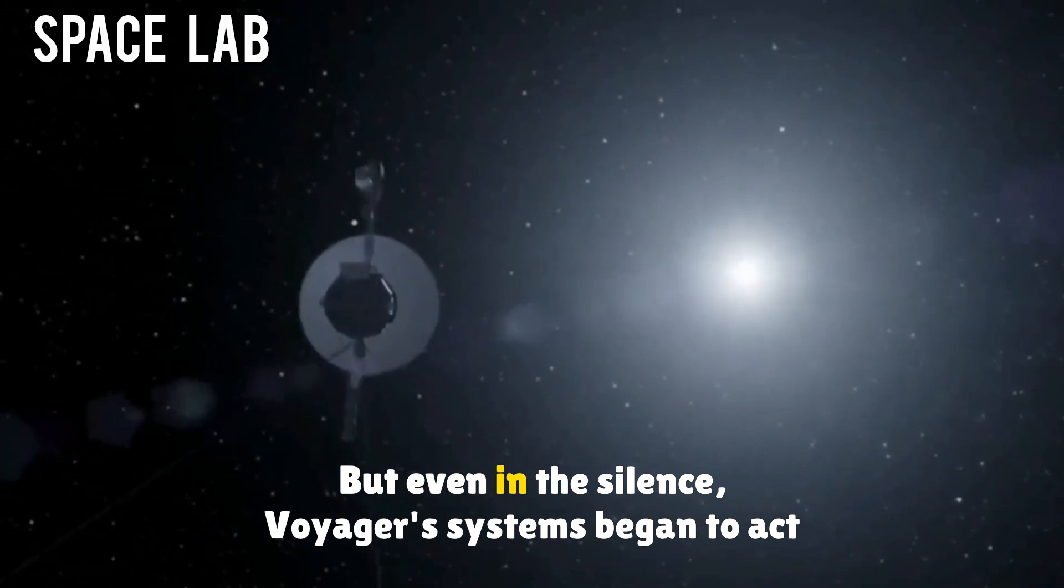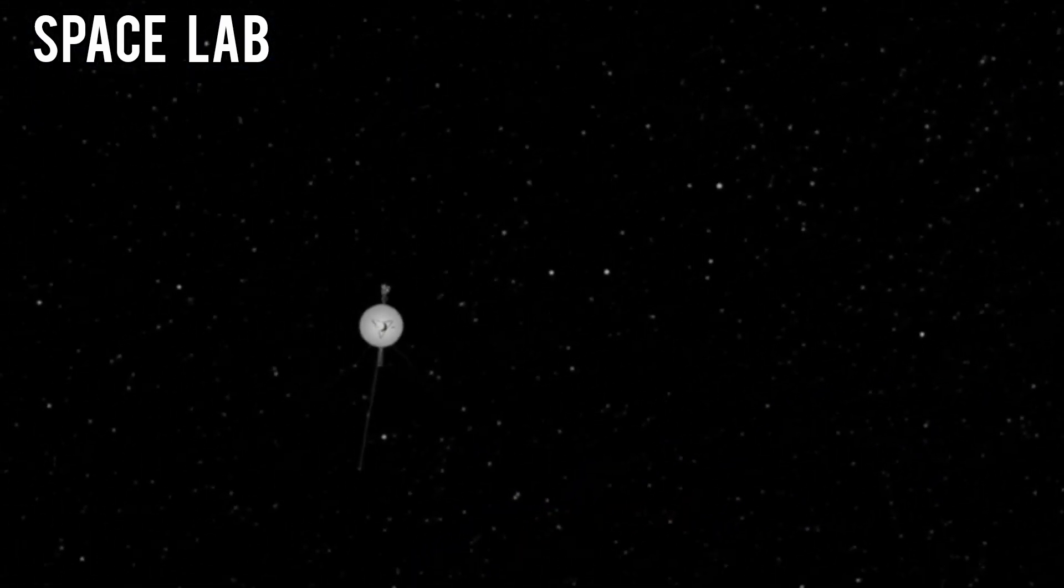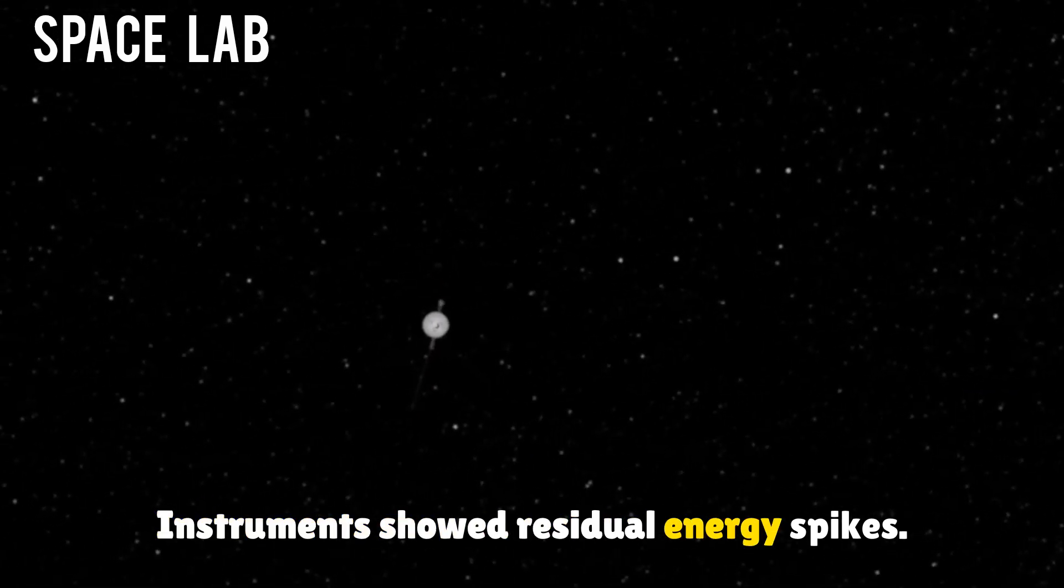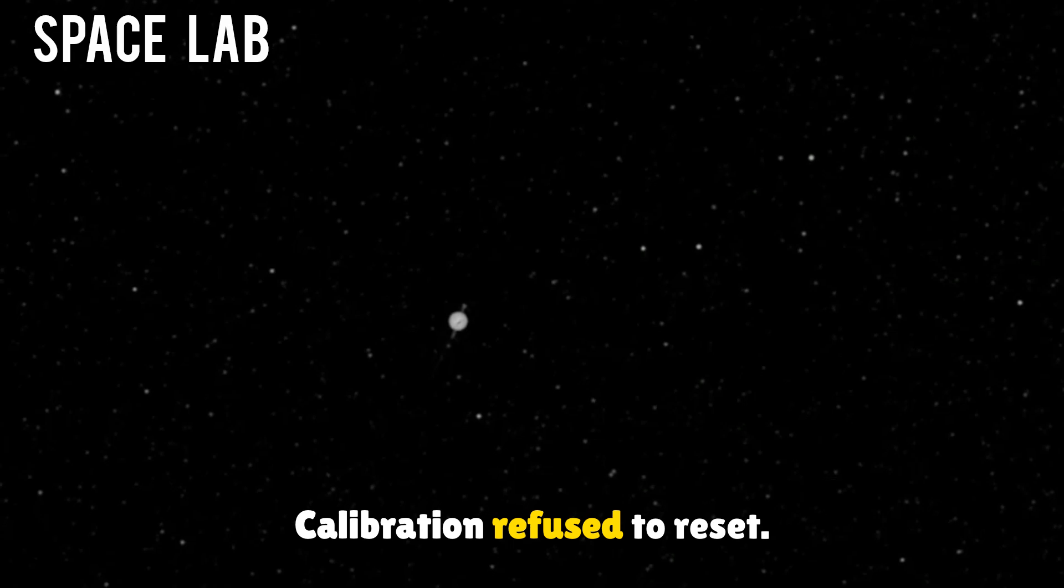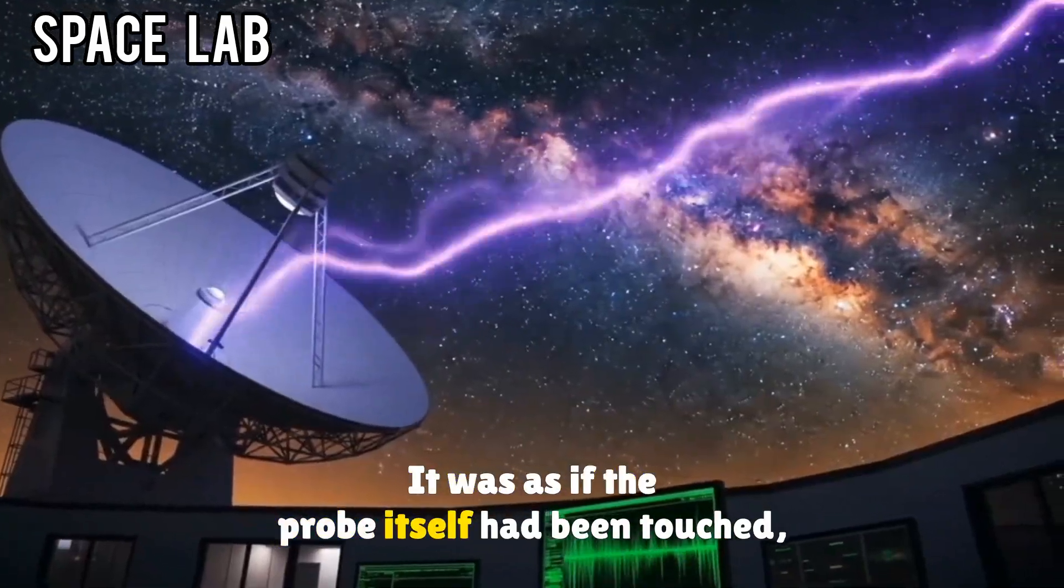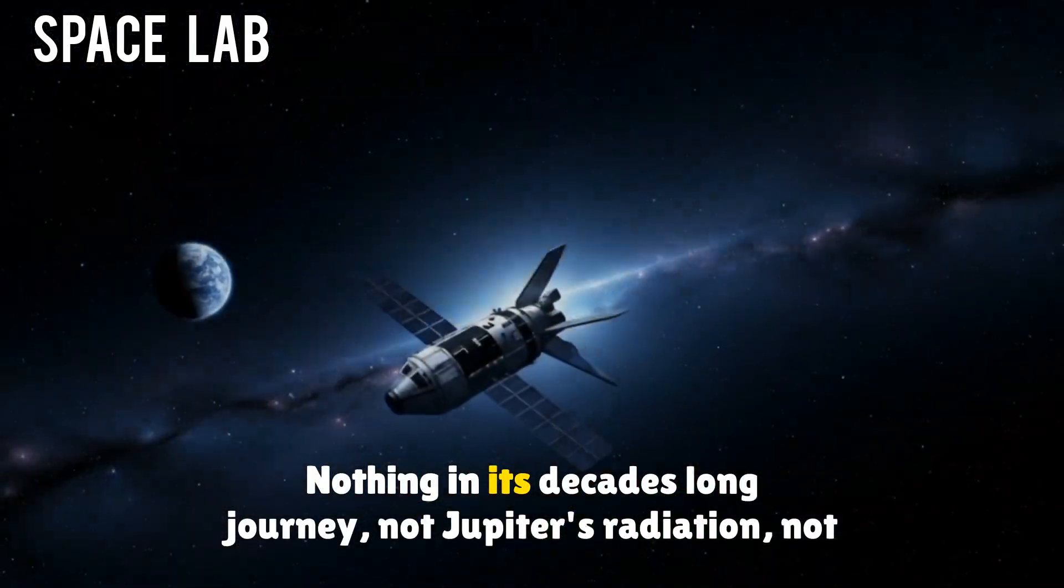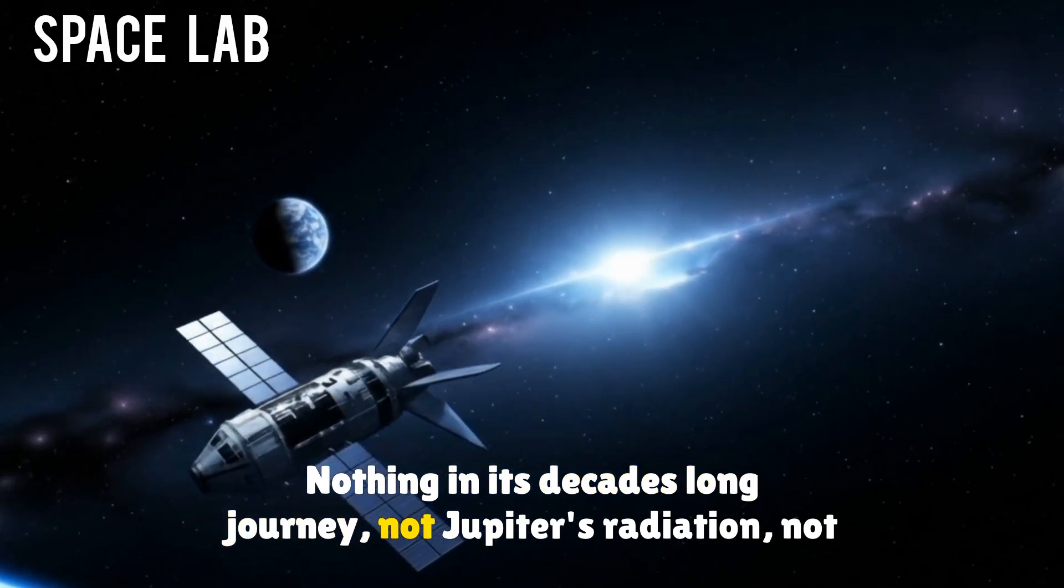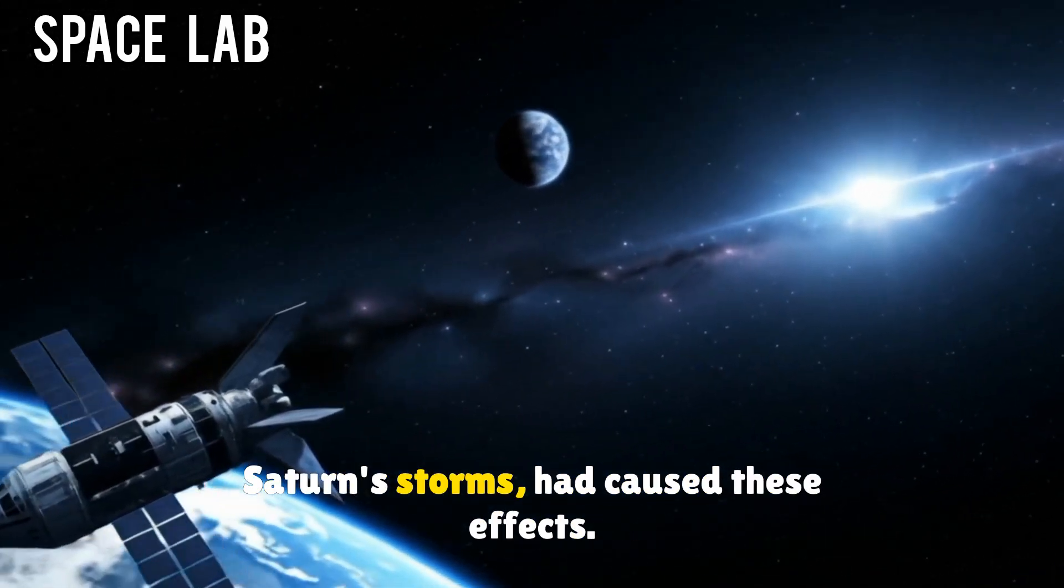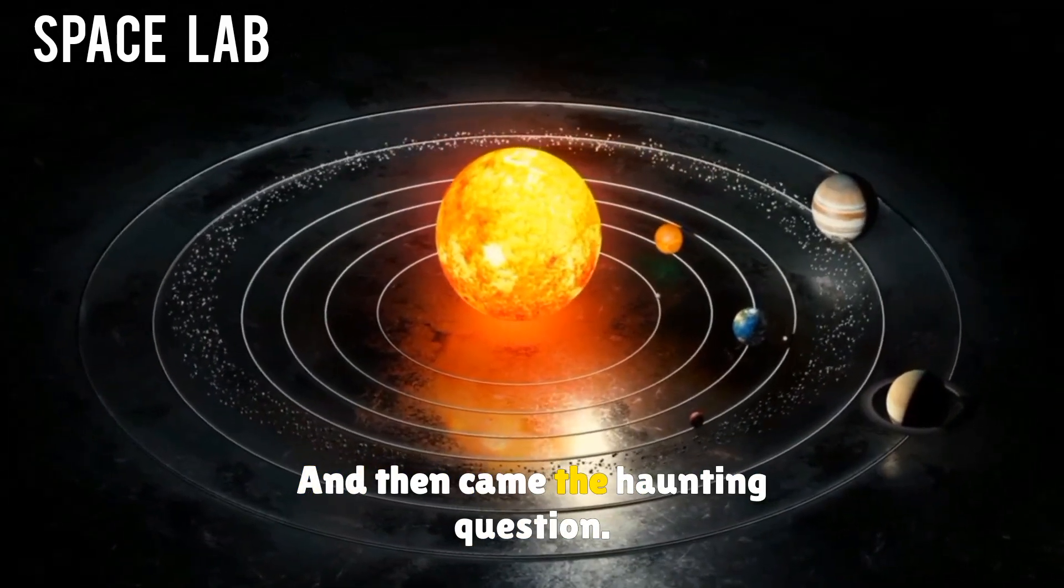It was as if a door had been shut. But even in the silence, Voyager's systems began to act strange. Instruments showed residual energy spikes. Calibration refused to reset. It was as if the probe itself had been touched, changed. Nothing in its decades-long journey—not Jupiter's radiation, not Saturn's storms—had caused these effects.